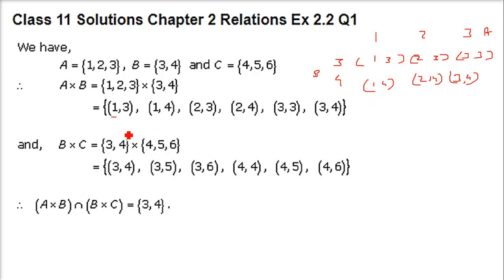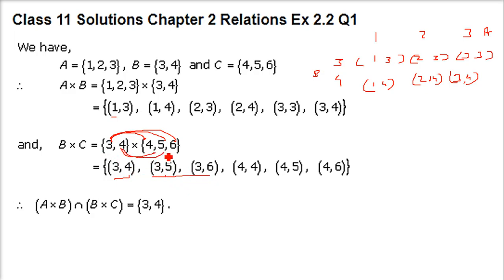There is another method — you have to take the Cartesian product of B cross C. So B is 3, 4 and C is 4, 5, 6. So B cross C gives: (3,4), (3,5), (3,6), (4,4), (4,5), (4,6). Now for the intersection we have to find the ordered pairs which are common. We see only (3,4) and (3,4) are common. Others are not. This is the intersection.